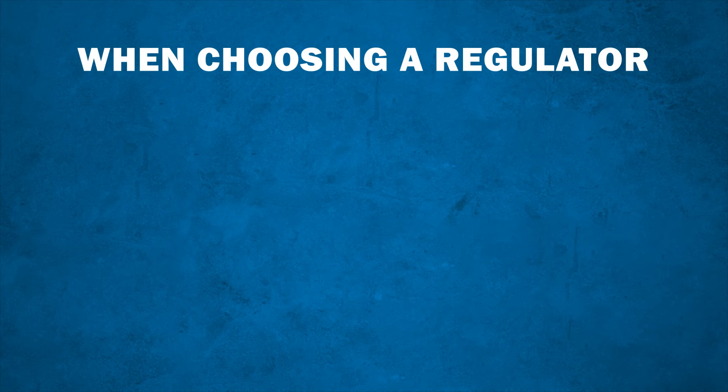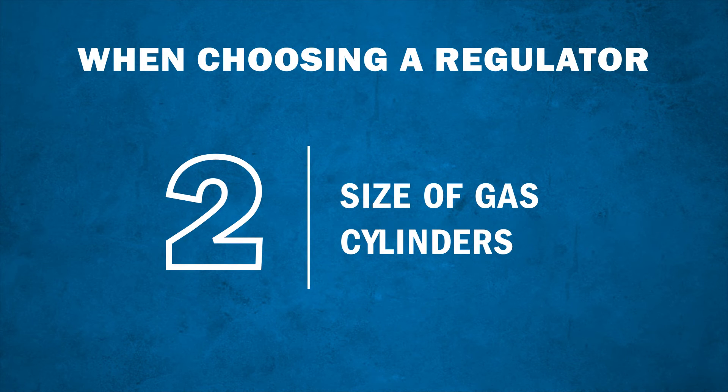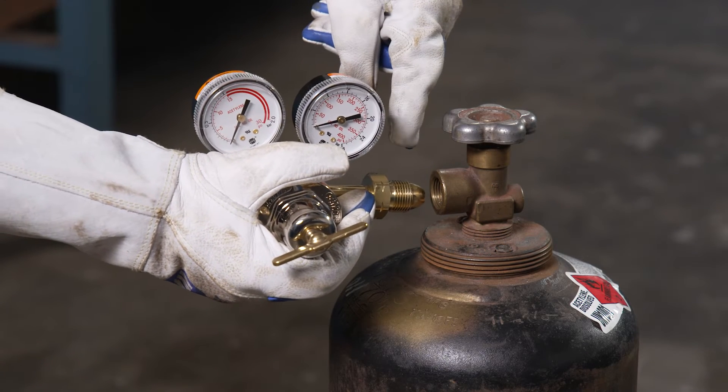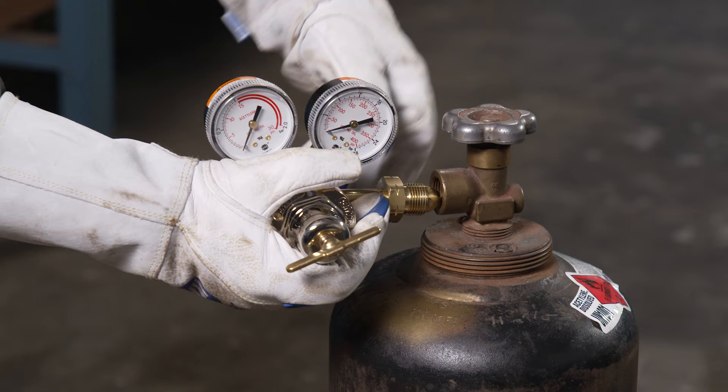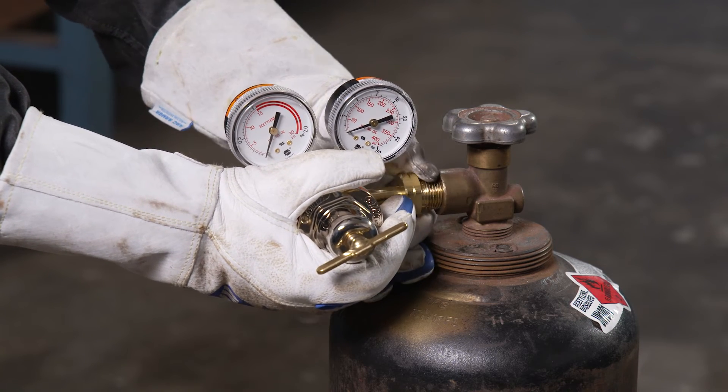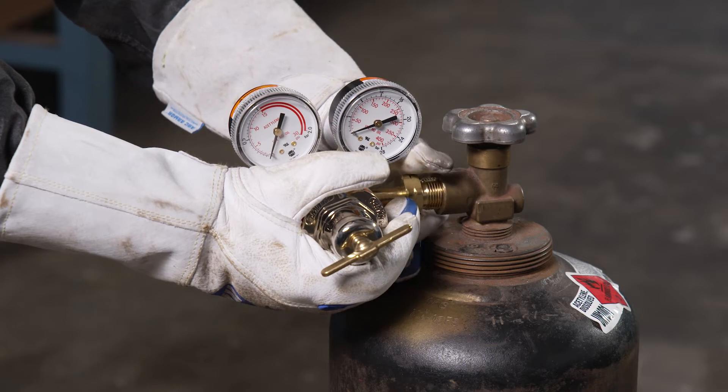Once you know which fuel you will be using, you will want to determine the size of the gas cylinder you will be connecting the regulator to, in order to determine the inlet connection. There are several inlet connection types established by the CGA, the Compressed Gas Association. These are identified by a three-digit designation, based on the size and type of gas cylinder you are connecting to.